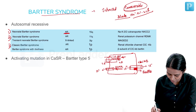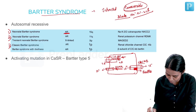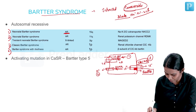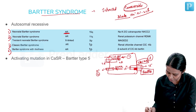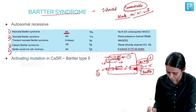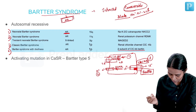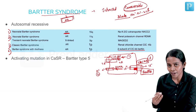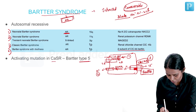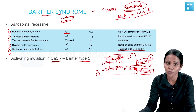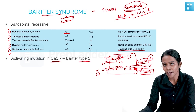Type 3 is called classic Bartter syndrome, also autosomal recessive, caused by a defect in CLCNKB. Type 4 is Bartter syndrome with deafness, involving the beta subunit of CLCNKB called Barttin, also autosomal recessive. There is also a rare type 5 Bartter, which involves an activating mutation of the calcium-sensing receptor present in the basolateral membrane of the thick ascending limb.